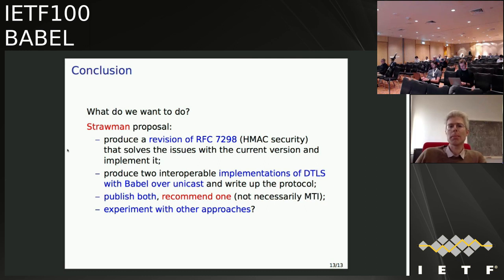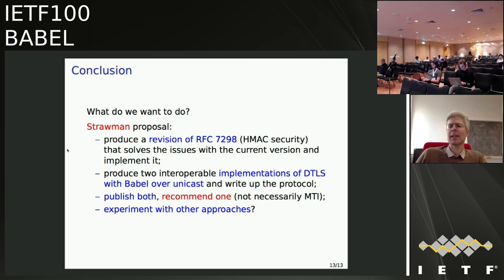Just to start the discussion: I think we should consider producing a revision of RFC 7298 that fits well with 6126bis and solves the security flaw in the current version, with at least two interoperable implementations. We definitely want to experiment with DTLS over unicast — I think we could finish that in a reasonably short amount of time once exam time is over, with interoperable implementations and a document capturing all the tricky details. If we succeed on those two points, we might be able to publish both, but we need to pick one as the recommended algorithm. And if people have other ideas and plans, I very much want to hear about them.